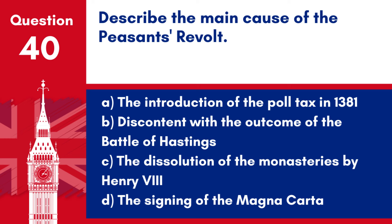Question 40. Describe the main cause of the Peasants' Revolt. a. The introduction of the poll tax in 1381. b. Discontent with the outcome of the Battle of Hastings. c. The dissolution of the monasteries by Henry VIII. d. The signing of the Magna Carta.